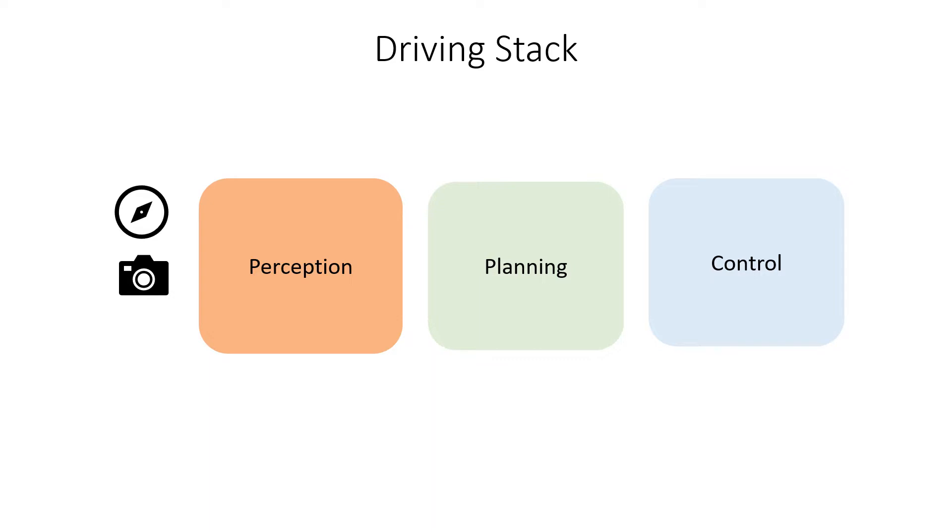From raw sensor data, the perception stack first builds a representation of the surrounding scene. Next, the planner uses this to determine a safe trajectory for the vehicle. This trajectory is then turned into steering and acceleration by control systems. And in this talk, we'll focus on the first part, on how to build effective representations for driving.